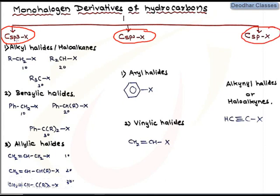When halogen is attached to an sp3 hybridized carbon, this class is further subdivided into three categories: alkyl halides or haloalkanes, where X is attached to the sp3 carbon of an alkyl group; benzylic halides, where halogen is attached to the benzylic carbon (the carbon next to the phenyl ring), which is also sp3 hybridized; and allylic halides, where halogen is attached to an sp3 allylic carbon — the carbon next to a carbon-carbon double bond. All three types can be primary, secondary, or tertiary depending on the degree of the carbon bearing the halogen.